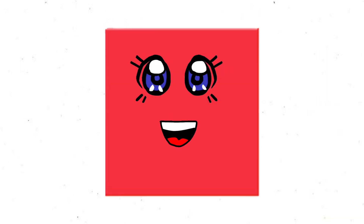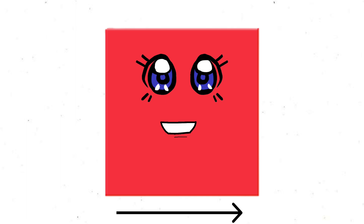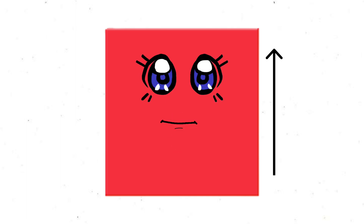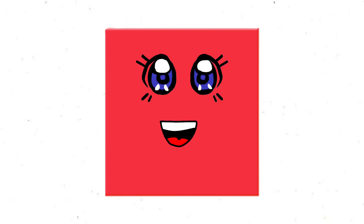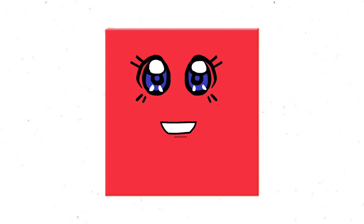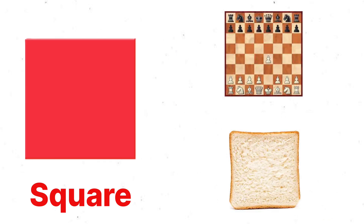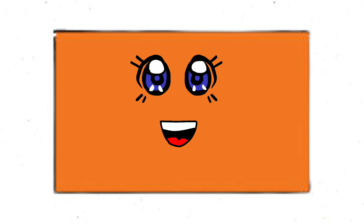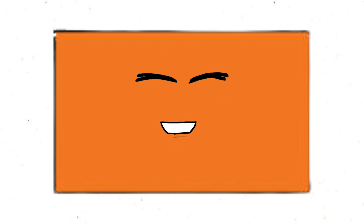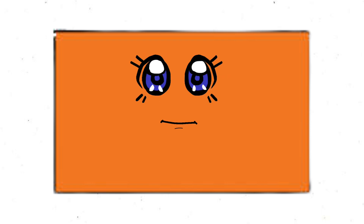Hi, I am a Square and I have four equal sides: one, two, three, four. The example of square is chessboard and bread slice.